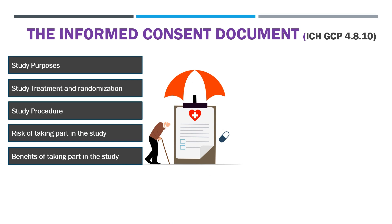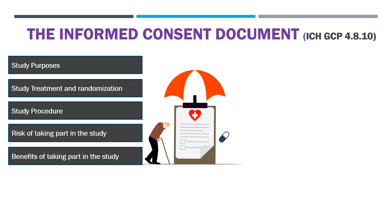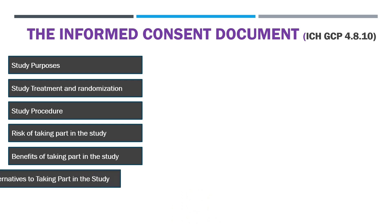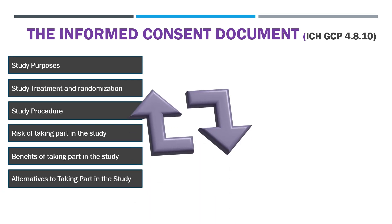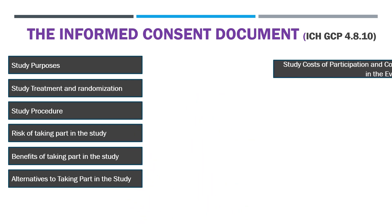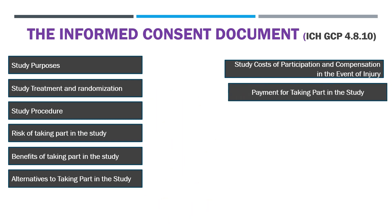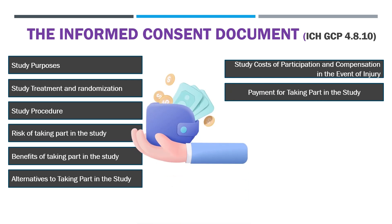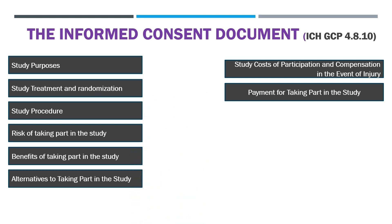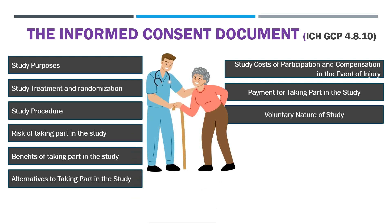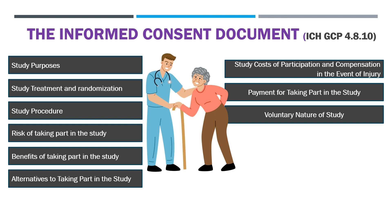5. Benefits of taking part in the study — the reasonably expected benefits should be explained. 6. Alternatives to taking part in the study — alternative procedures or courses of treatment that may be available to the participant. 7. Costs of participation and compensation in the event of injury — the document must state compensation and/or treatment available to the participant in the event of trial-related injury. 8. Payment for taking part in the study — the anticipated prorated payment, if any, to the participant for participating in the trial. 9. Voluntary nature of the study — participation is voluntary; participants may refuse to participate or withdraw from the trial at any time without penalty or loss of benefits.